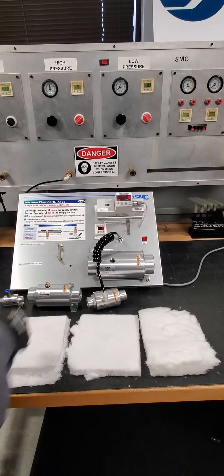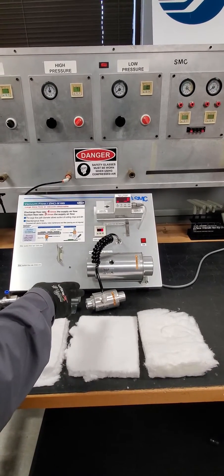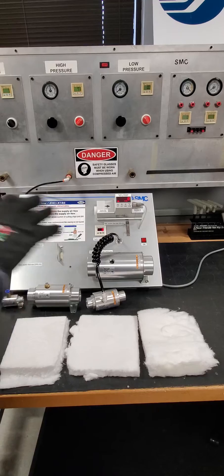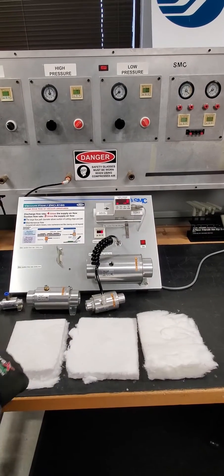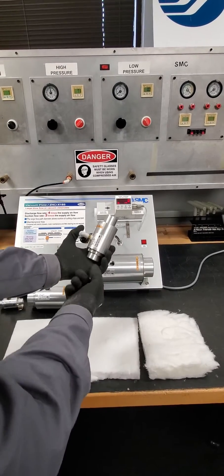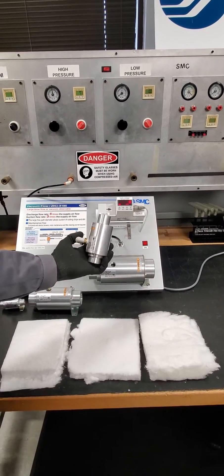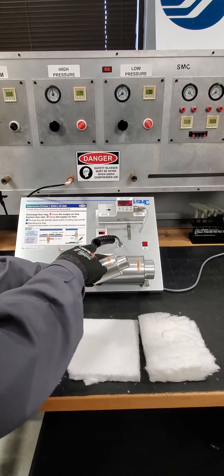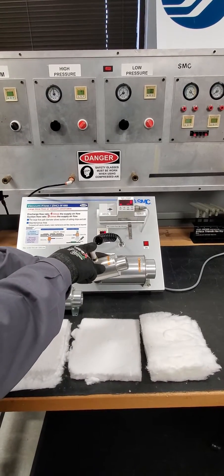The ZH20 weighs approximately 400 grams, just to keep that in mind for end-of-arm tooling. It creates approximately 1,200 liters a minute of suction flow, and it's only consuming about 400 liters a minute of compressed air.